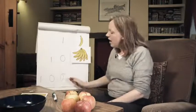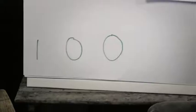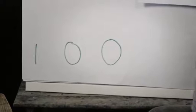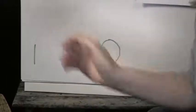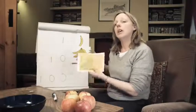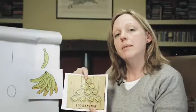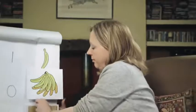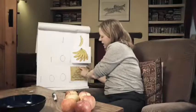And now, if we look at 100, we can see that the digit 1 has been shoved along another place and its value has got 10 times bigger again. It now represents one box of 100 bananas. Like this.